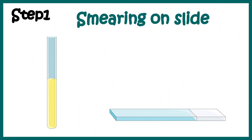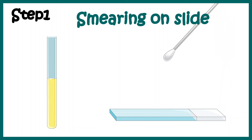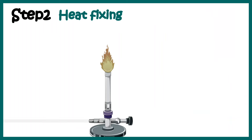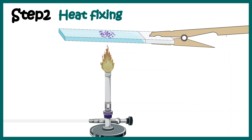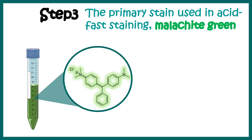Step one is smearing on the slide. You take some amount of the culture and put it on the slide and smear it. Then, to fix them on the slide, you heat it quickly and briefly, and all of the bacteria would be immobilized on the slide, making the staining procedure easier.